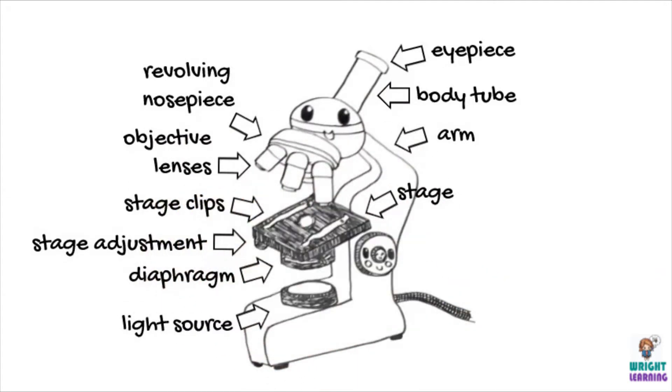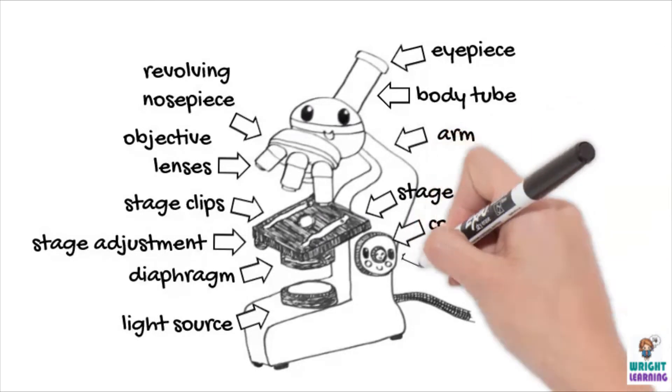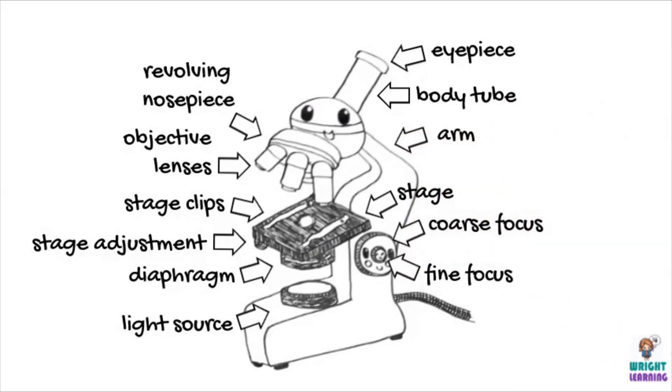The dials used to focus the microscope may be arranged together or separately. These are called the coarse and the fine focus, which I'll explain more about later on in this video. We also need a power source to power our light, so remember to plug in your light microscope.